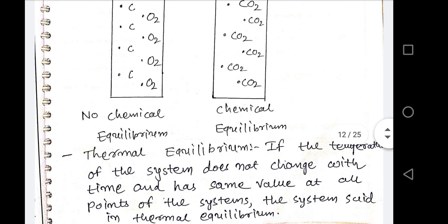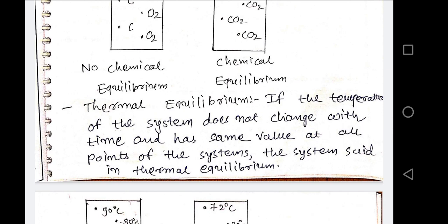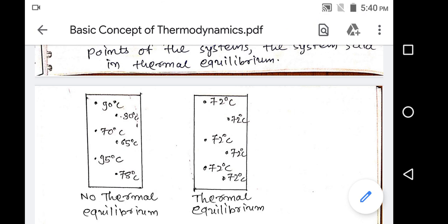Thermal equilibrium: if the temperature of the system does not change with time and has the same value at all points of the system, the system is in thermal equilibrium. No thermal equilibrium means different temperatures at each and every point. Thermal equilibrium means the same temperature at each and every point of the system.